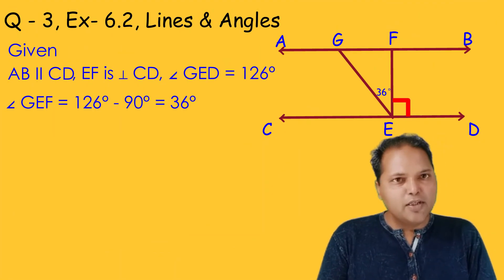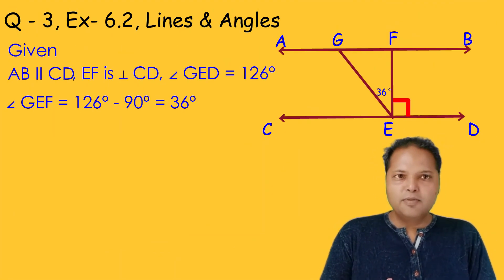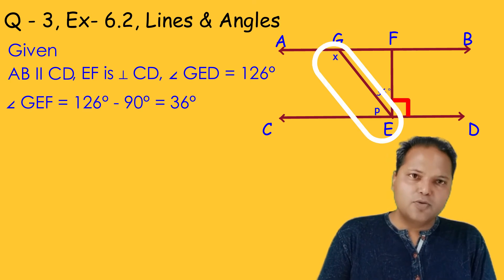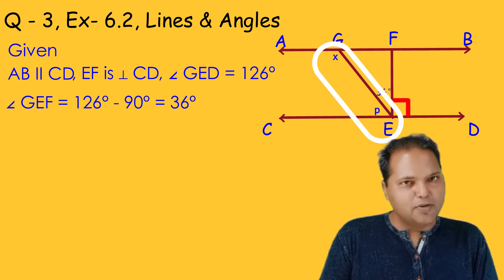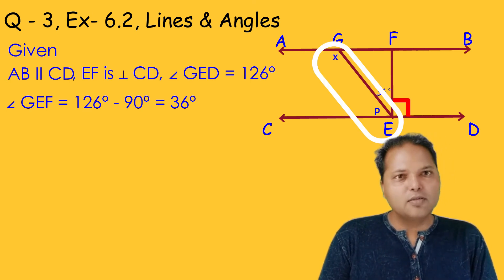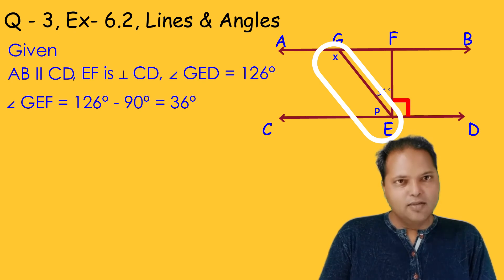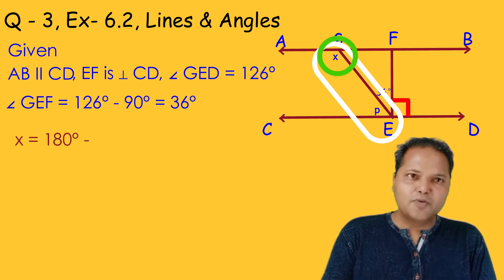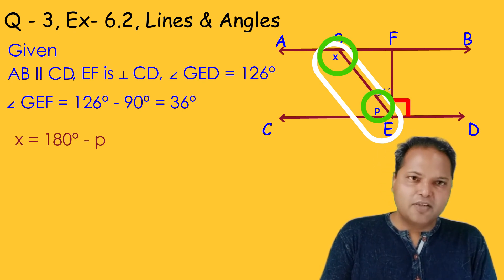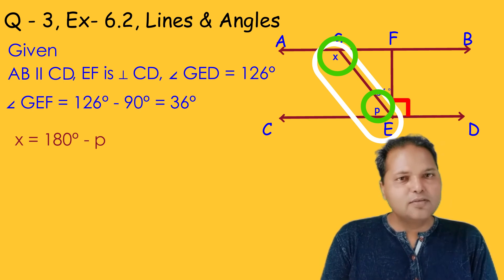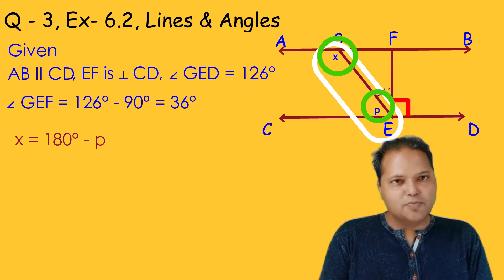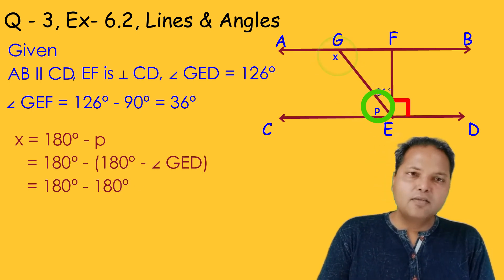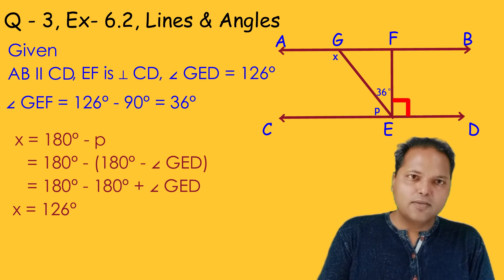Since AB and CD are parallel to each other, these two angles are supplementary to each other. Hence the value of this angle is equal to 180 degrees minus this particular angle, and we get the answer here.